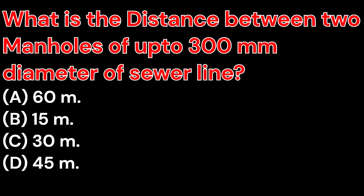What is the distance between two manholes for a sewer line of up to 300 mm diameter? A. 60 metres. And the right answer is 45 metres.